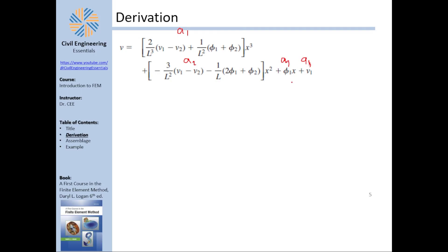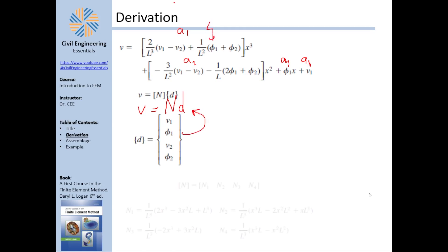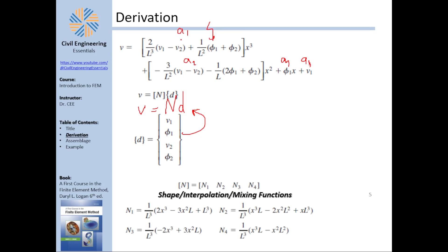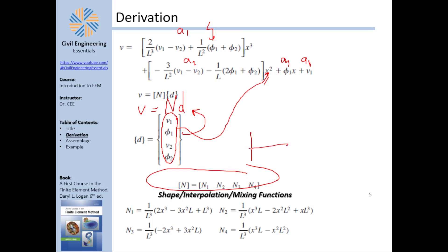The ultimate goal is to find the shape functions — also called interpolation or mixing functions — so that displacement at any point is v = N·d, where d are the nodal displacements and N are the mixing functions. If you know the nodal deflections from solving the FEM problem, you can find the deflection at any point x along the beam using these functions. This is exactly how structural software like Autodesk Robot draws those smooth deflection curves.